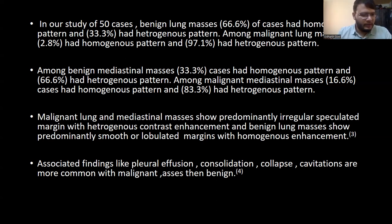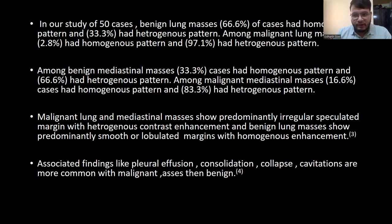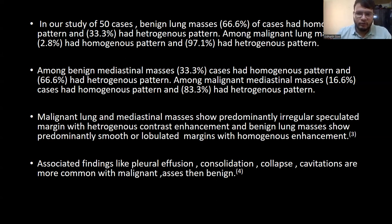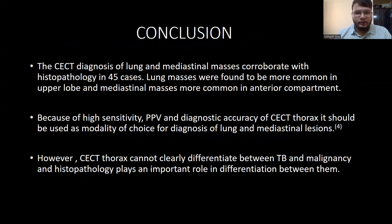Among mediastinal masses, benign lesions showed a homogeneous enhancement pattern while malignant lesions showed heterogeneous enhancement. Common CT features associated with malignancy included central location, rib or mediastinal invasion, irregular margins with heterogeneous enhancement, and spiculated borders. Smooth or lobulated margins with homogeneous enhancement favored a benign diagnosis. Associated findings such as pleural effusion, consolidation, collapse, and cavitation were more commonly seen with malignant lesions.